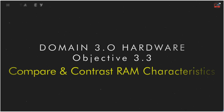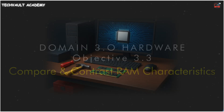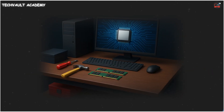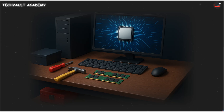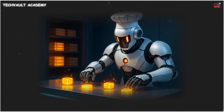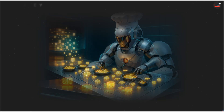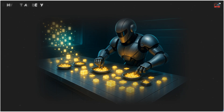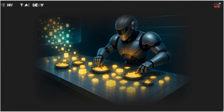We're continuing Domain 3 hardware with Objective 3.3, where we'll compare and contrast RAM characteristics. Think of RAM, or Random Access Memory, as your computer's super-fast temporary workbench. Data is loaded here from long-term storage for the CPU to work with. The bigger and faster your workbench, the more efficiently your computer can operate.